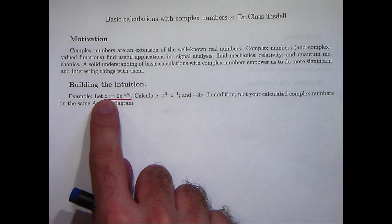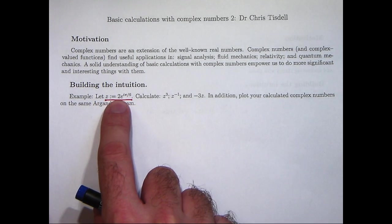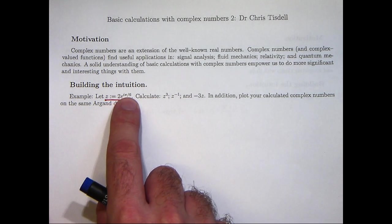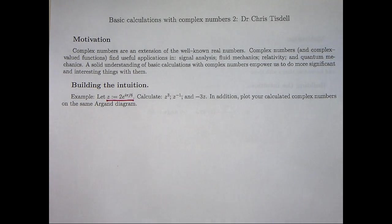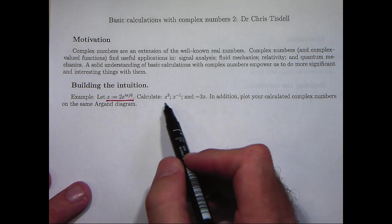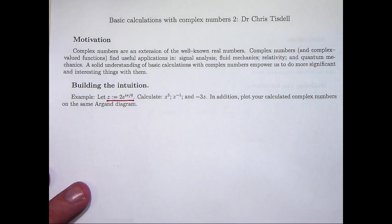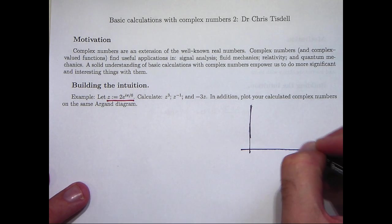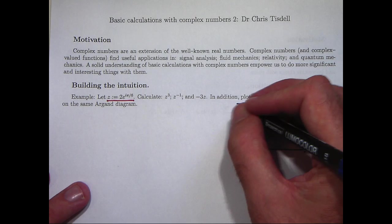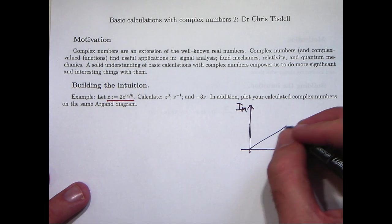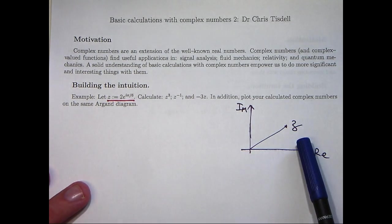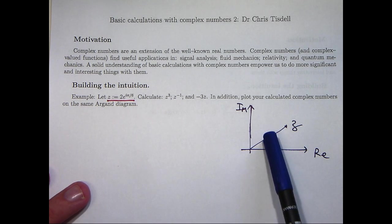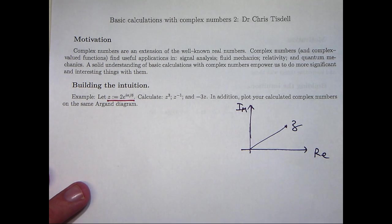Now here we have a particular complex number that's written in polar form. There's a length, in this case 2, and an angle, in this case π/6, associated with the polar form. And we're asked to calculate z³, z⁻¹, and -3z. Well, if I draw in the complex plane, we can write any complex number z with a length to the origin and an angle to the positive real axis.